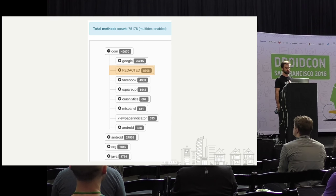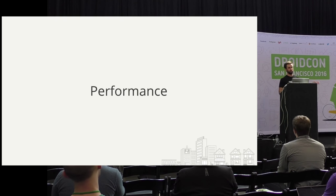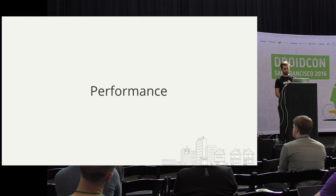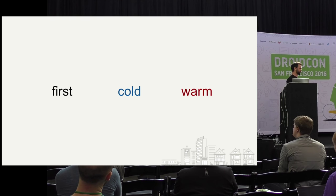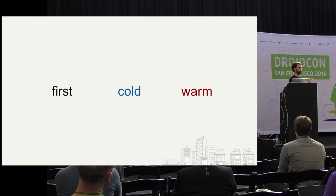I looked at my method counts and everything seemed fine — can I just forget about this problem now? Well, before you do, I want to notify you about some performance issues we found when investigating this. When breaking down app start time, I want to talk about them in three categories: first start, when literally the first time someone opens your app; cold start, when someone opens your app again after that but it's been opened before; and warm start, when your app is already in memory and people load it again.